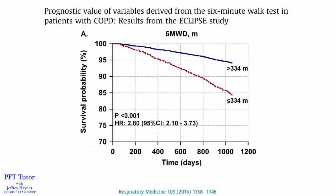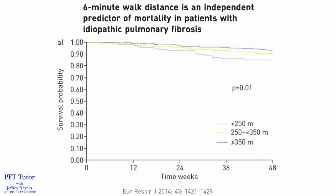The 6-minute walk distance can provide insight into prognosis. A study using data from the ECLIPSE trial showed that in patients with COPD, if the 6-minute walk distance is less than 334 meters, there was a much higher risk of death. Similar findings can be seen in idiopathic pulmonary fibrosis, where a 6-minute walk distance less than 250 meters was associated with a higher risk of death.